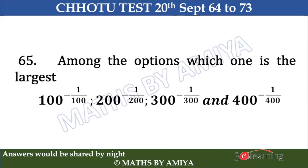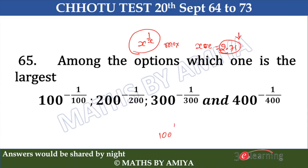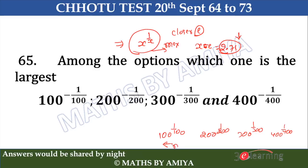Now question 65: among the options, which one is the largest? We know x raised to power 1/x gives maximum value when x equals e, where e is approximately 2.71. Any value near to 2.71 would give the maximum. So among 100^(1/100), 200^(1/200), 300^(1/300), and 400^(1/400), the closest value to e gives the maximum.